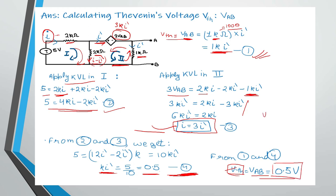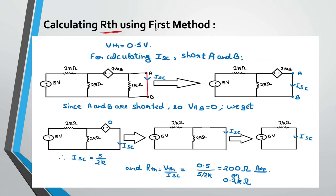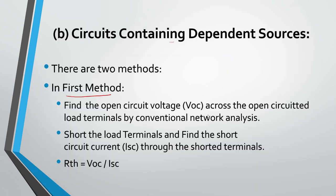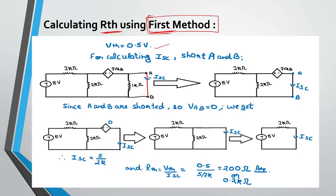We have calculated VTH which is 0.5V. Now we calculate RTH using the first method. In this method we found VOC equals 0.5V. Now we calculate ISC — the current flowing through the shorted load terminals. We short the load terminals and find this current, then RTH equals VOC divided by ISC. For ISC, we short terminal AB, which makes the 1kΩ useless so we remove it.